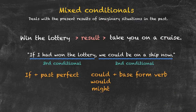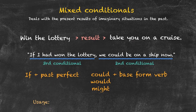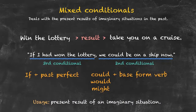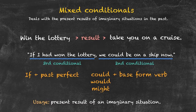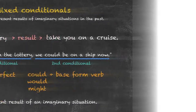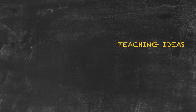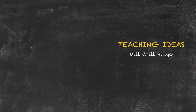It's a mix of the second and the third conditionals. The typical usage is: the present result of an imaginary situation that occurred in the past. Let's have a look at a teaching idea appropriate for this conditional. A nice one is mill drill bingo, using excuses.